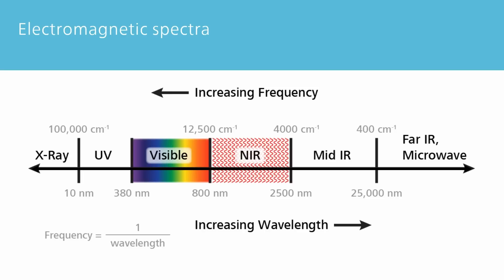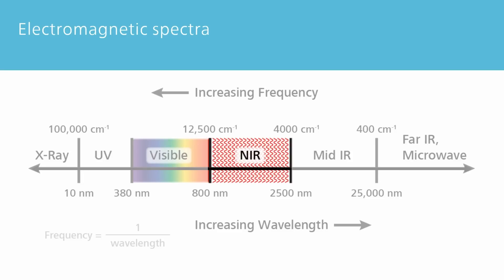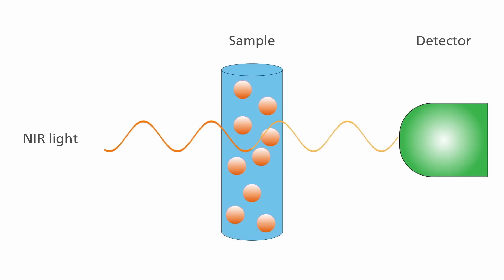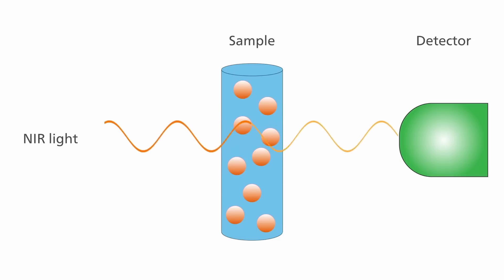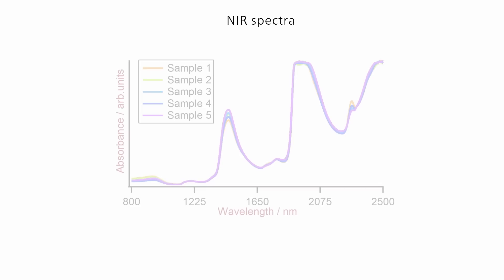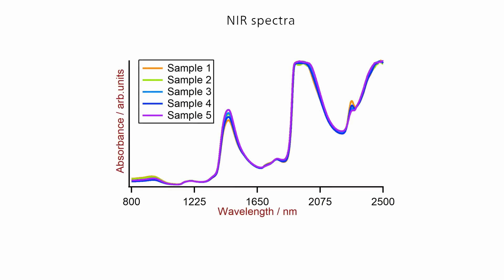Near-infrared light lies in the wavelength range of 780 to 2500 nanometers. NIR spectroscopy is based on the absorption of NIR light by various atomic bonds, which is then used to characterize different materials.